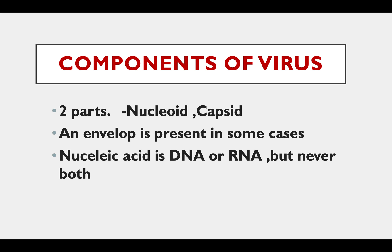Components of a virus: There are 2 components — Nucleoid and Capsid. The Capsid is the outermost part. An envelope is present in some cases. The nucleic acid is either DNA or RNA, but never both.